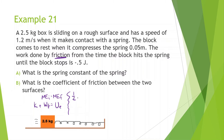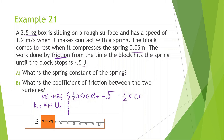Writing it out: one-half times 2.5 times 1.2 squared, plus the work done by friction which is given as negative 0.5 joules, equals one-half times k times 0.05 squared. Solving for k: 1.2 squared times 2.5 times 0.5 plus 0.5, times 2, divided by 0.05 squared. And we get around 1040 newtons per meter.